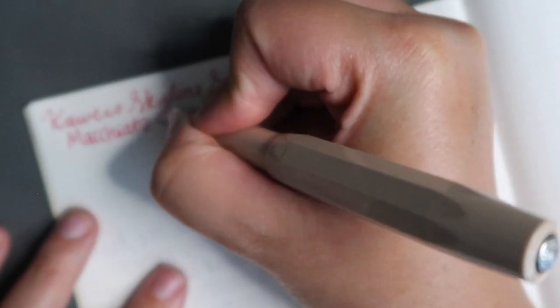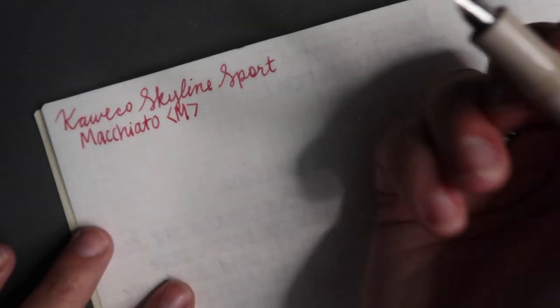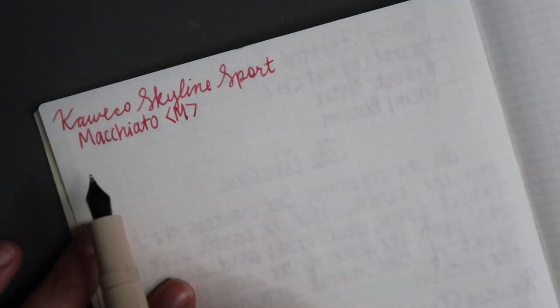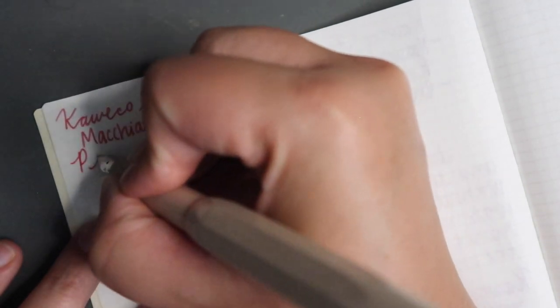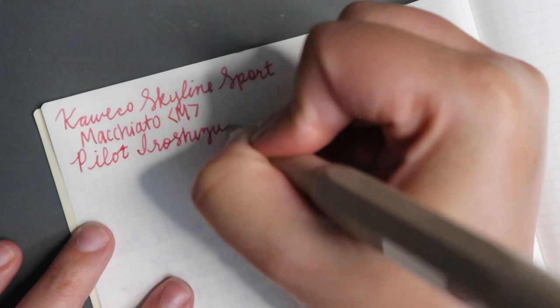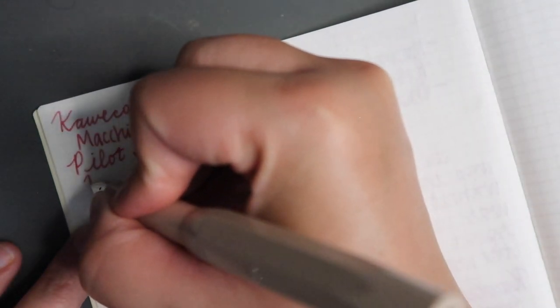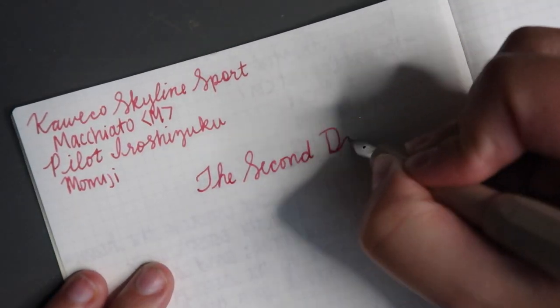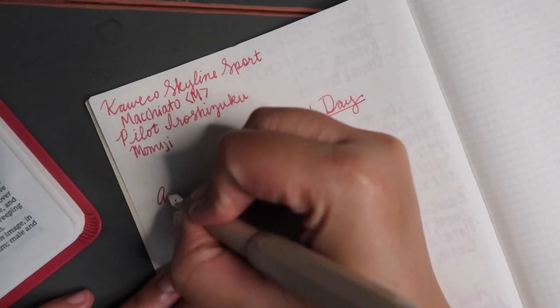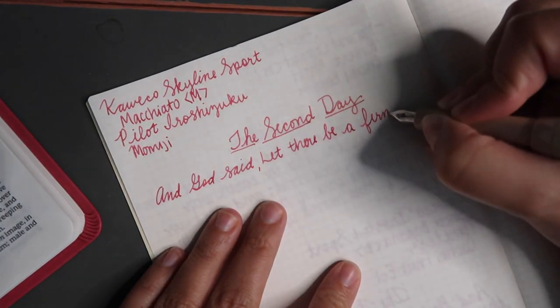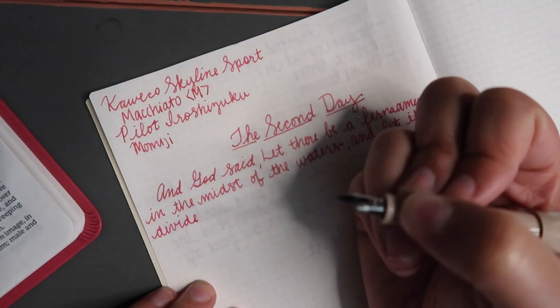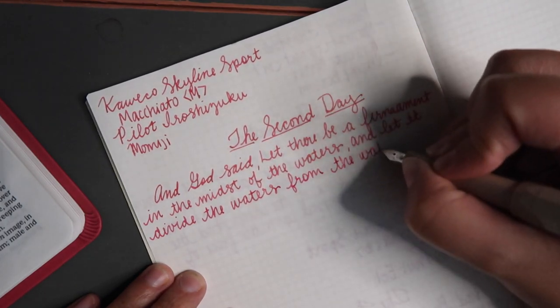The next pen I'm using is my Kaweco Skyline Sport in Macchiato. This is also a medium nib, and this ink color is Pilot Iroshizuku Momiji. In our natural mind, in our earthly eyes and ears, it's really easy to get caught up in the how. How did God create this beautiful planet? How did He create not only the planet, but the entire universe? When you start hearing the noise of all the various theories, it's really easy to get lost in that. But regardless of the theories, we have to be 100% sold that this is the truth.